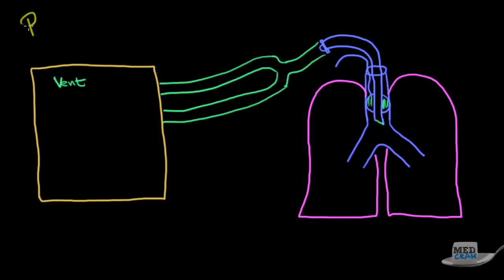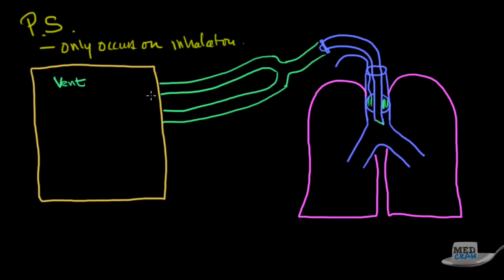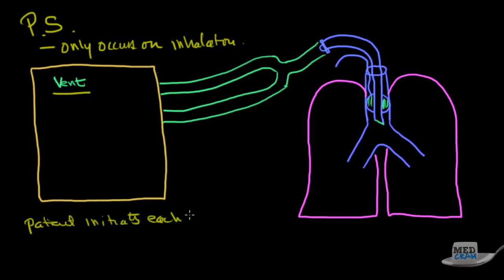The next mode of ventilation is called pressure support, or PS. This is similar to PEEP and CPAP except it only occurs on inhalation. Like AC, instead of delivering a specific volume, the patient gets a certain amount of pressure — a specific pressure support for each breath. The patient initiates all the breaths. Higher pressure support gives bigger breaths. This is a very popular weaning mode of ventilation, as is CPAP.